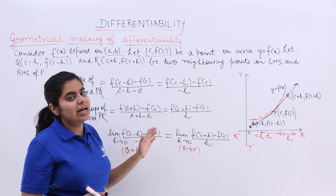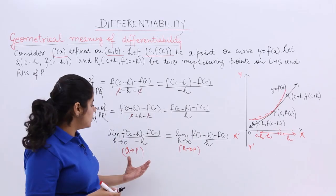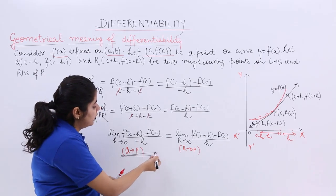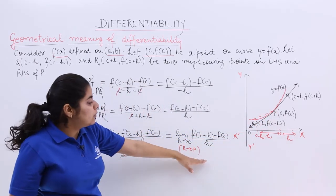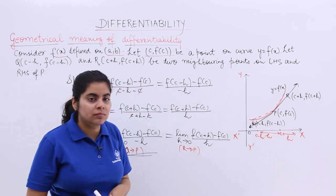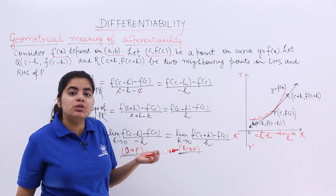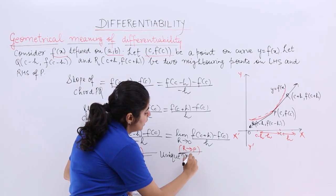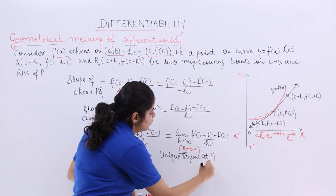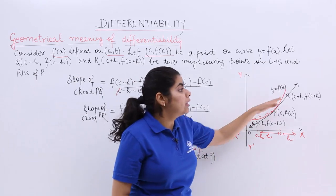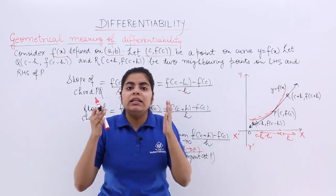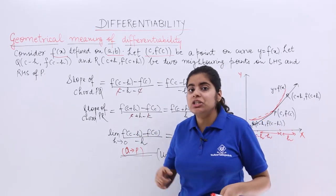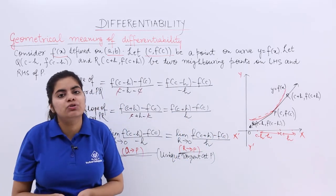If differentiability requires these two to be equal, and we see that they are equal, that means the limiting slope of the tangent drawn from Q to P equals that from R to P. Since these are equal, only one tangent will exist — a unique tangent exists at P because the left-hand derivative equals the right-hand derivative. The geometrical meaning of differentiability is nothing but its relation with the slope and the unique tangent at that particular point.